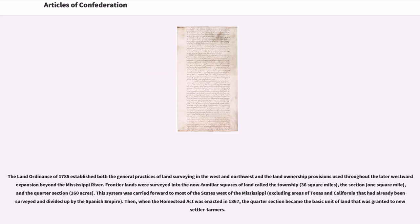The Land Ordinance of 1785 established both the general practices of land surveying in the west and northwest and the land ownership provisions used throughout the later westward expansion beyond the Mississippi River. Frontier lands were surveyed into the now familiar squares of land called the Township (36 square miles), the Section (1 square mile), and the Quarter Section (160 acres). This system was carried forward to most of the states west of the Mississippi, excluding areas of Texas and California that had already been surveyed and divided by the Spanish Empire. When the Homestead Act was enacted in 1867, the Quarter Section became the basic unit of land granted to new settler farmers.